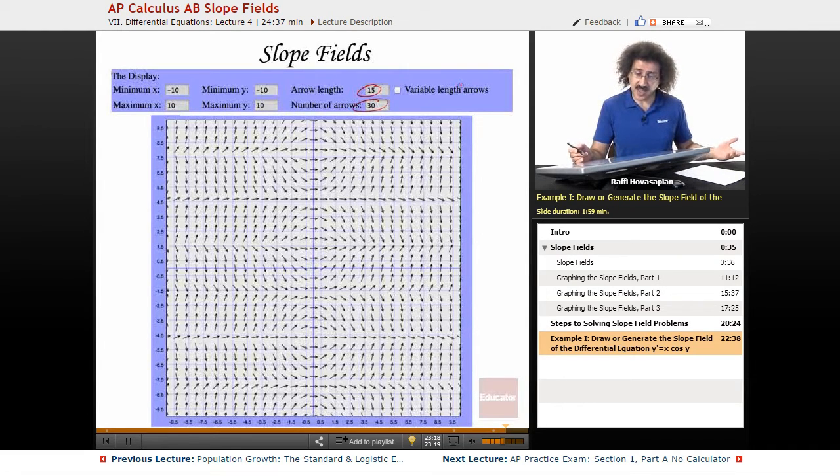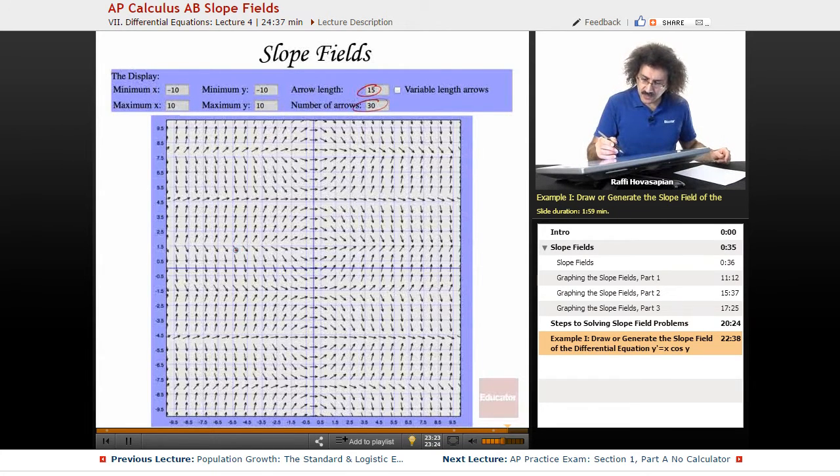So essentially what's happening is this. Draw out some solutions. It looks like this all of a sudden jumps up from here and jumps down from here, so chances are there are some equilibrium solutions, so just follow the arrows.